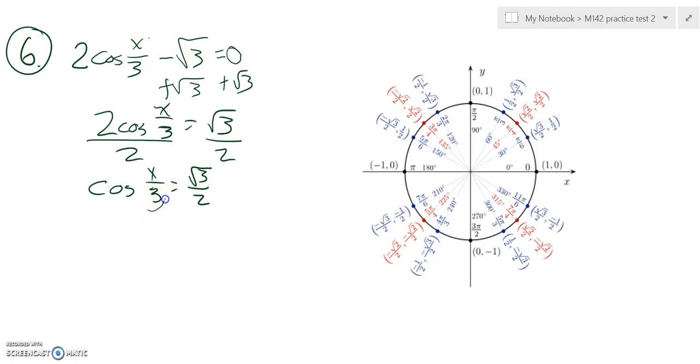So I know some things that this x over 3 is going to equal. So x over 3 can equal, let's see, root 3 over 2. Happens here and here. So it looks like the cosine of whatever this value is would end up being π over 6, or it would end up being 11π over 6.